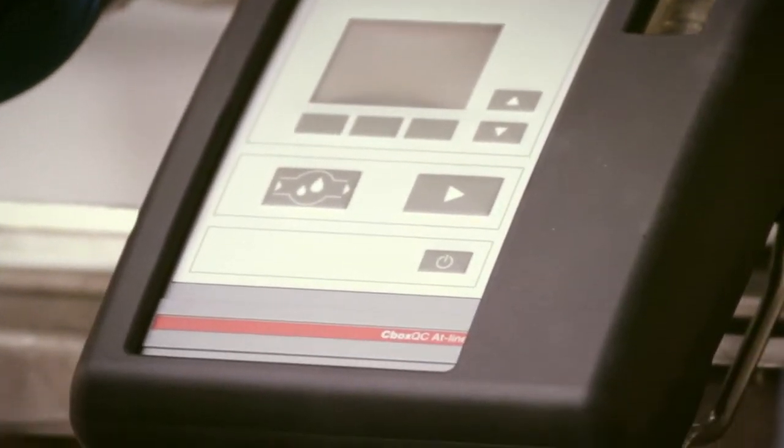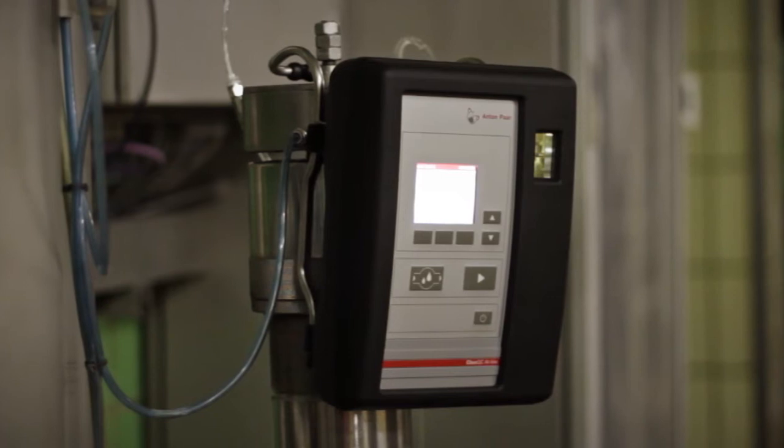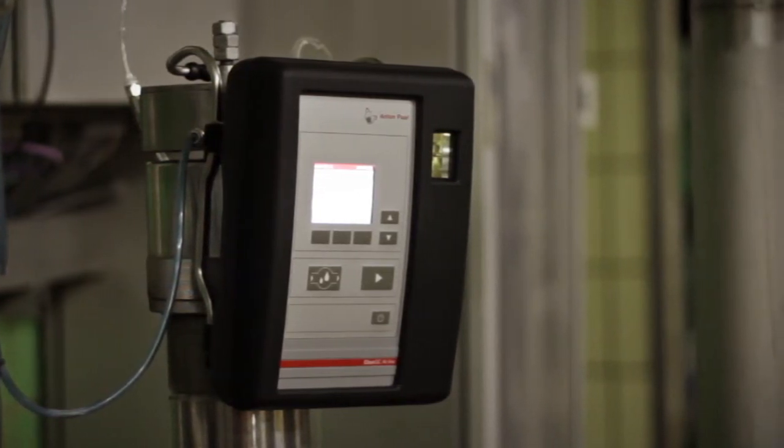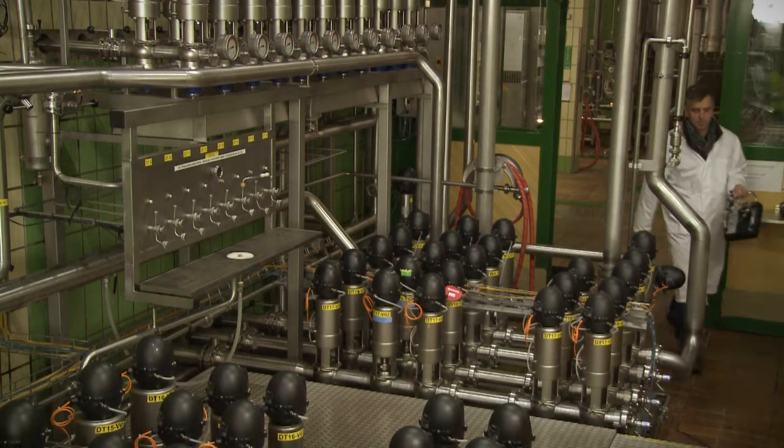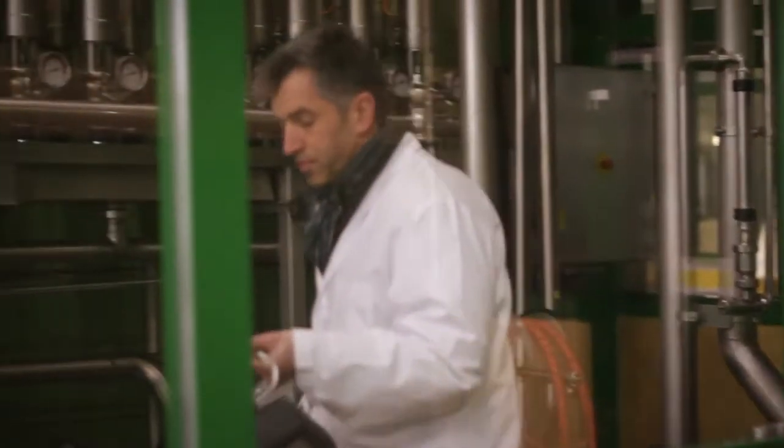Cbox QC ATLINE is a very versatile instrument. It can be used at different sample points like in the filtration process, at bright beer tanks, filling lines or tankers. Perform the following steps for reliable and correct results in the process environment.